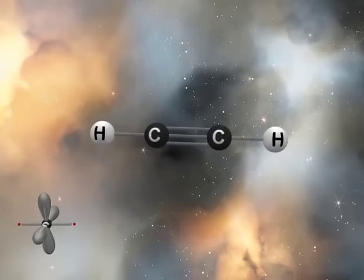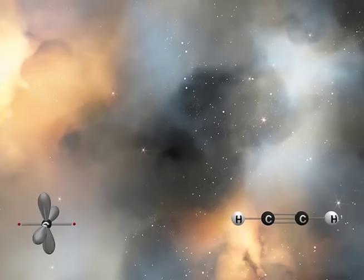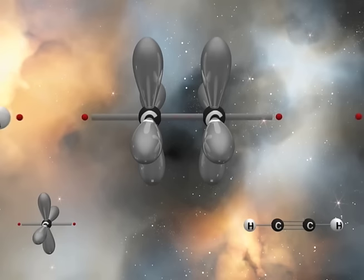A simple carbon compound that utilizes sp carbons is ethyne, or acetylene. From the two-dimensional Lewis diagram, we see that each carbon forms two sigma bonds and two pi bonds. Thus, both carbons are sp hybridized. Starting with two sp hybridized building blocks, we can begin to construct the molecule in three dimensions by forming the C-C sigma bond. Next, the two carbon-hydrogen sigma bonds are formed, which affords the linear sigma bond framework for ethyne.